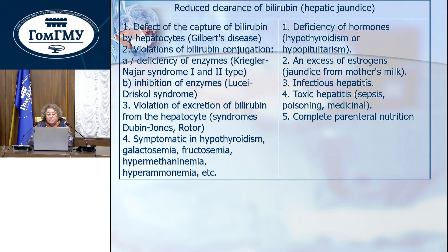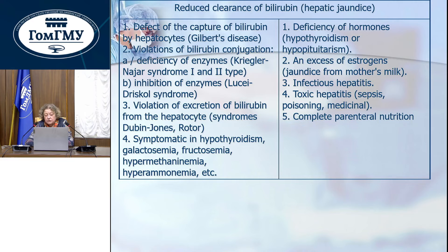Equal hepatic jaundice is caused by deficiency of different hormones such as in hypothyroidism and hypopituitarism, excess of estrogens, jaundice from breast milk, infectious hepatitis, toxic hepatitis caused by sepsis or poisoning, different drugs, and complete parenteral nutrition.